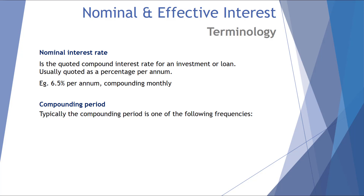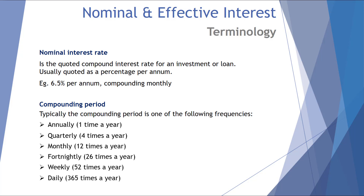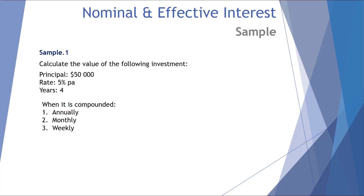It's not always monthly — there are different compounding periods. Typically we'll be presented with annually (once a year), quarterly (four times a year), monthly (12 times a year), fortnightly (26 times a year), weekly (52 times a year), and daily (365 times a year). We can get questions in Further Maths that relate to all these different compounding periods.